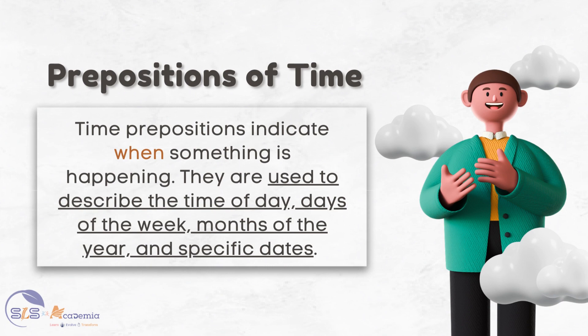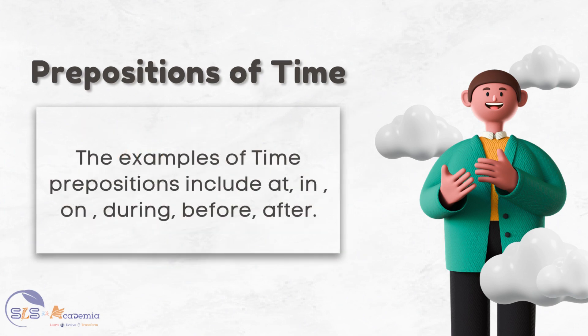The next type of prepositions we have to learn are the time prepositions. Time prepositions indicate when something is happening. They are used to describe the time of day, days of the week, months of the year, and specific dates. Examples of time prepositions include: at, in, on, during, before, and after.